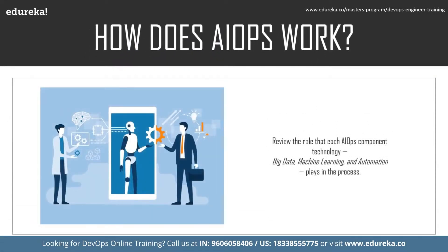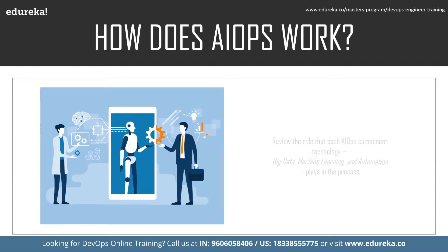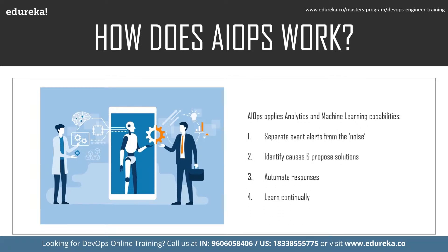The easiest way to understand how AIOps works is to review the role that each component — big data, machine learning, and automation — plays in the process. AIOps uses a big data platform to aggregate siloed IT operations data in one place. This data can include historical performance and event data, streaming real-time operation events, system logs and metrics, network data, and more. AIOps then applies focused analytics and machine learning capabilities to separate significant event alerts from the noise, using rule application and pattern matching to comb through IT operations data and separate signals from noise.